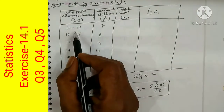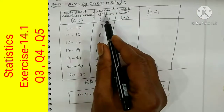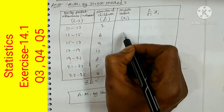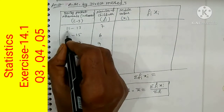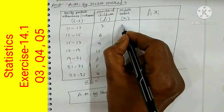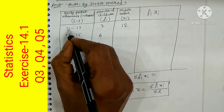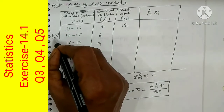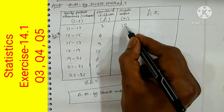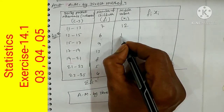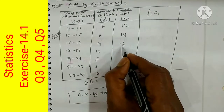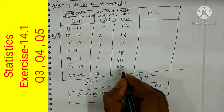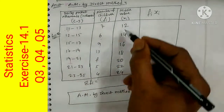In the direct method, the class intervals are given as 11-13, 13-15, and so on. The number of children (frequency) is given as 7, 6, 8, and so on. We calculate the middle value Xi: 11 plus 13 is 24, half is 12. The class length is 13 minus 11 = 2, so we just add 2 each time: 12, 14, 16, 18, 20, 22, 24 — these are the middle values.